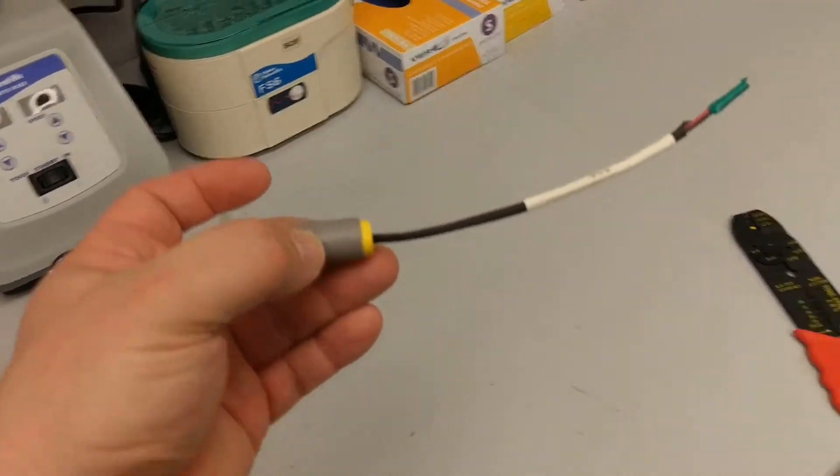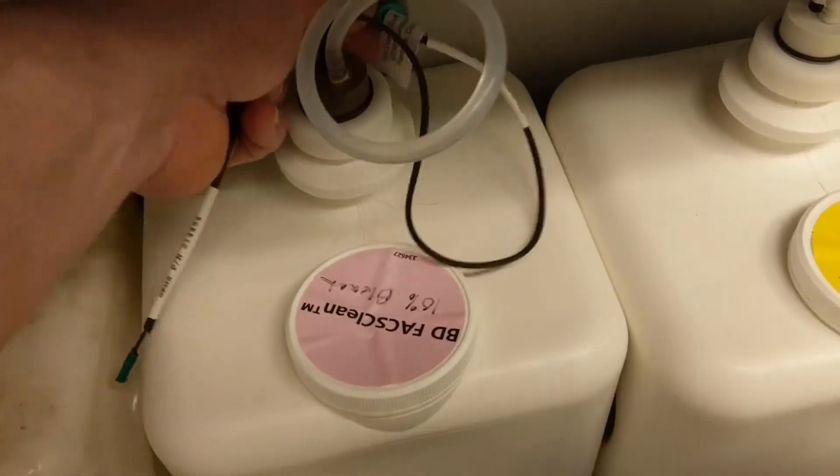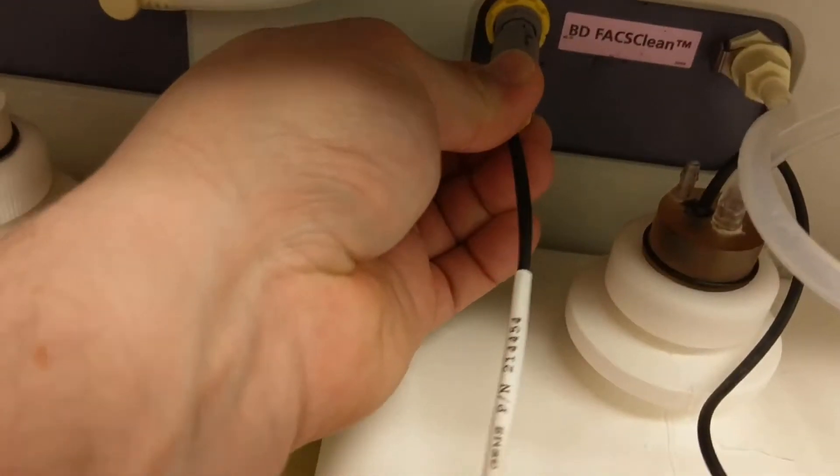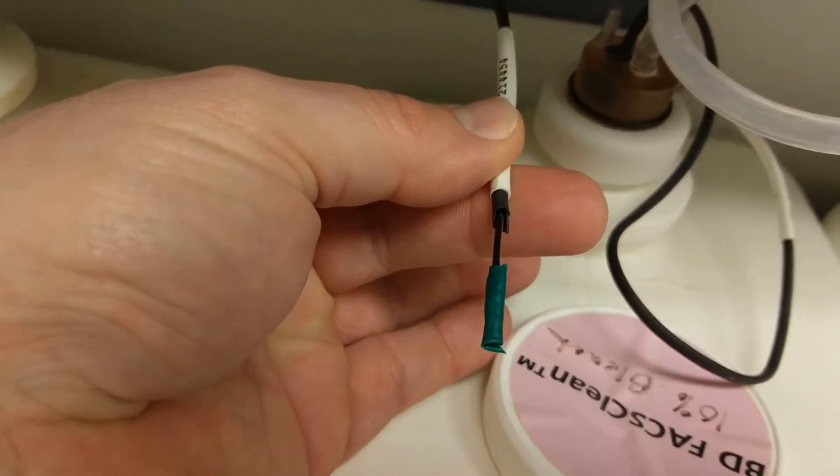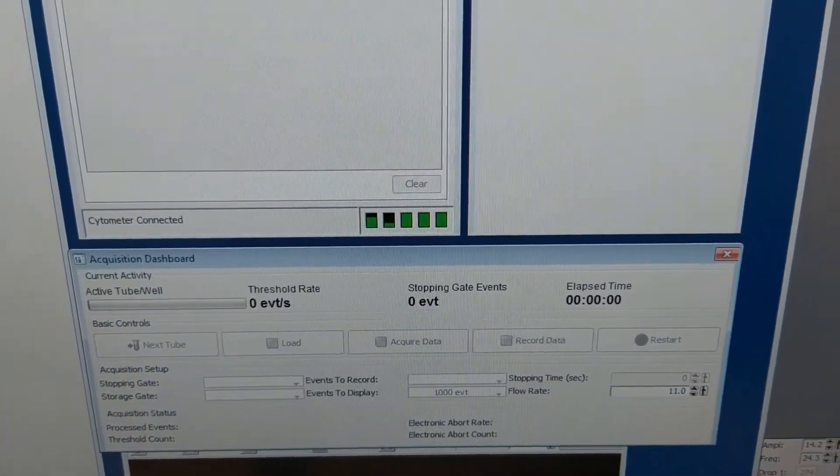So once that's fully taped, now you can just come over to your system, unplug the one that's not registering anymore, and just plug in your new one that you've just fused the wires together. And now if you come over to your software, you're going to see that now it's reading that all the tanks are full.